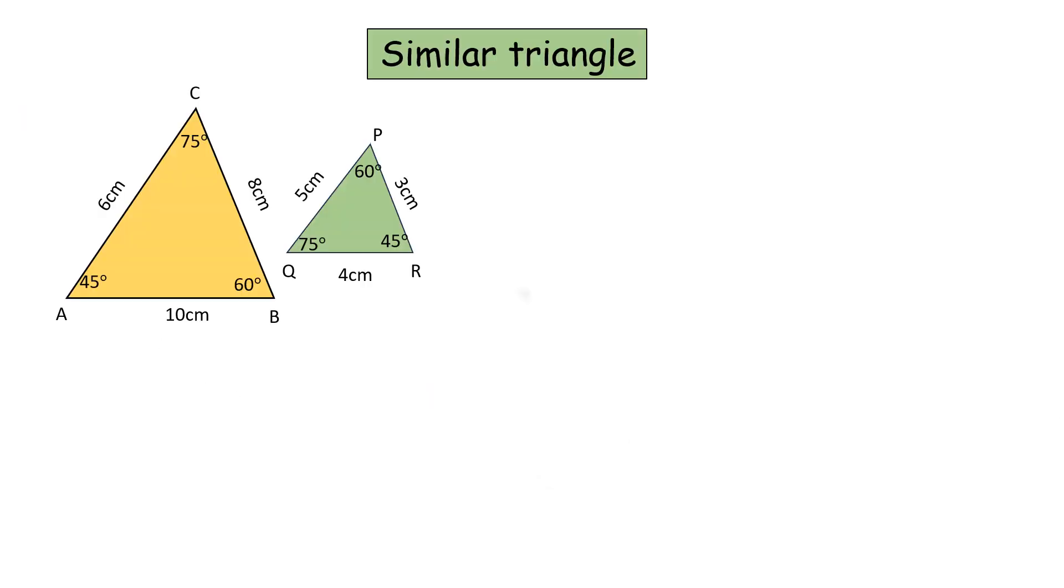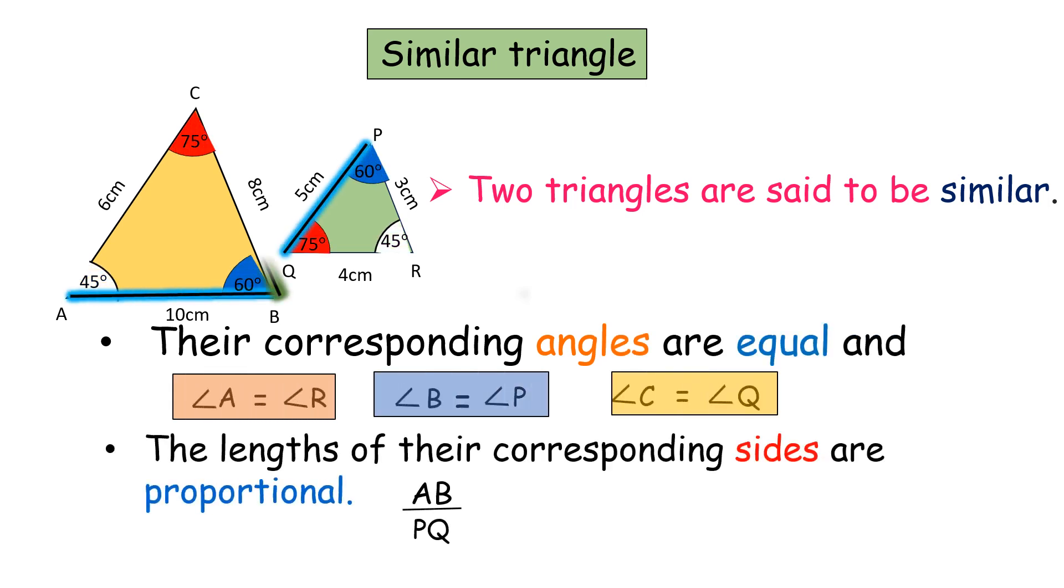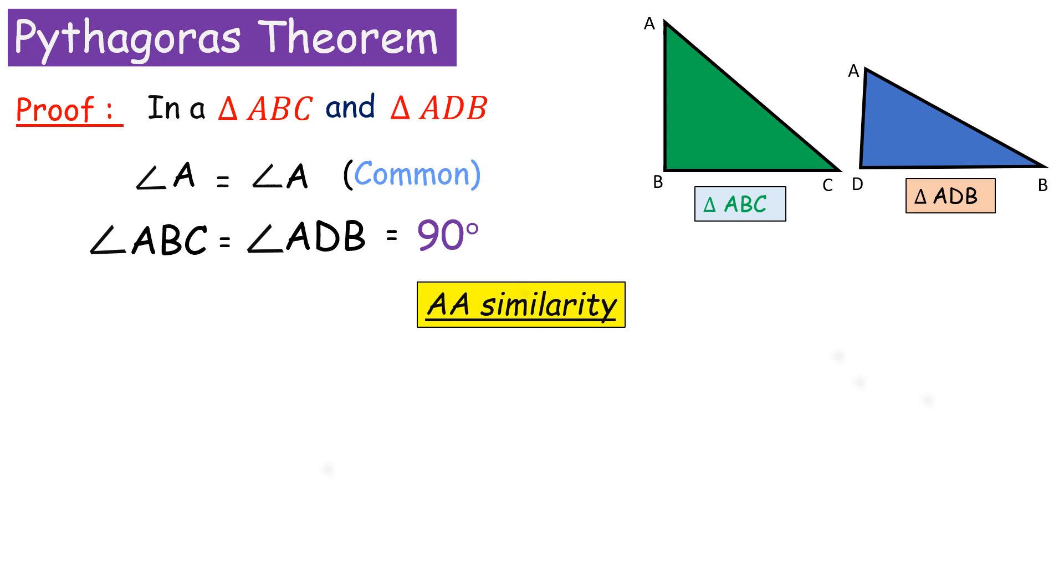According to the similarity, two triangles are said to be similar if their corresponding angles are equal and the lengths of their corresponding sides are proportional. By angle-angle similarity or AA similarity, if two angles of one triangle are congruent to two angles of another triangle, then the triangles are similar.